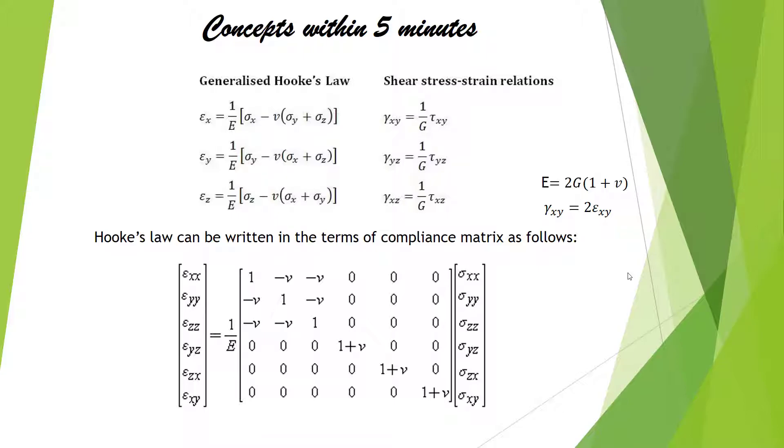And we have got the shear strains. Gamma xy equals 1 by G times tau xy and so on. Here E is the Young's modulus whereas G is the shear modulus.